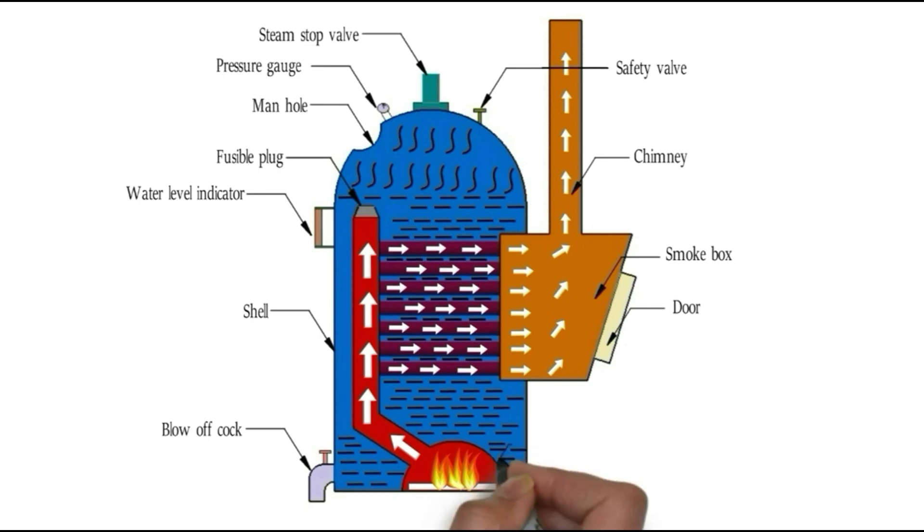One manhole is provided on the boiler shell so that a man can enter inside the boiler and do the regular maintenance of inside parts.